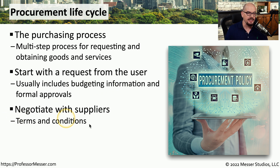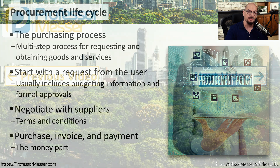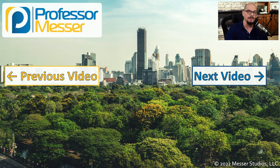There's usually terms and conditions that have to be negotiated, and sometimes we'll even bring in the legal team to finalize this process. And once those terms are finalized, we can complete the purchase process. Normally, we would create a purchase order inside of our company and provide that purchase order to a vendor. The vendor will then fulfill the terms of that purchase order by providing licenses, equipment, or anything else that's listed on the purchase order. They'll then send an invoice requesting payment for that PO.